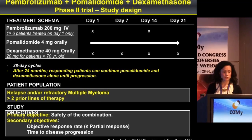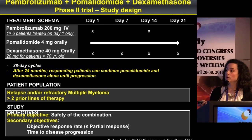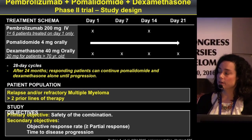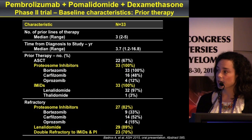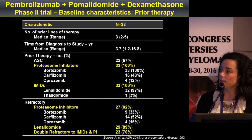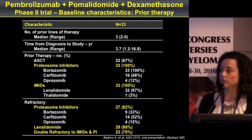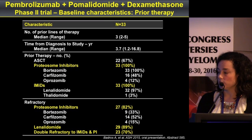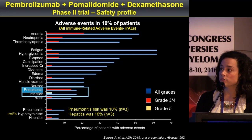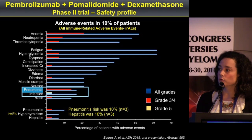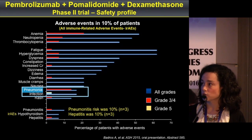Now moving to the pembrolizumab plus pomalidomide and dexamethasone combination. The treatment schedule was similar to the lenalidomide/dexamethasone trial — pembrolizumab 200 mg every other week — in the same patient population. Baseline characteristics showed 82% of patients were refractory to proteasome inhibitors, 89% refractory to lenalidomide, and 70% were double refractory. Regarding safety, there was an increased risk of pneumonia in this trial, as well as a 10% risk of pneumonitis and hepatitis, though overall the combination was tolerable.